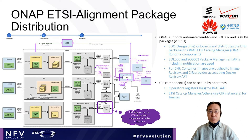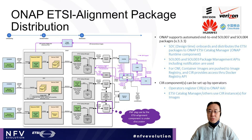Hi, this is Byung-Wu John from Ericsson. I'm going to talk about ONAP ETSI alignment and package distribution. ONAP supports automated end-to-end SOL007 and SOL004 package distribution by conforming to ETSI specifications. SDC has a design-time tool to onboard and distribute the ETSI packages to the ONAP ETSI catalog manager, which is an ONAP shared component at runtime. We're conforming to SOL005 and SOL003 package management APIs, including notification. For CNF, container images are pushed to an image registry, and the CIR provides access through the standard Docker registry API. We expect operators to provide their own CIR components, and operators register the CIR to ONAP A&AI, which is the ONAP inventory and external component management system, so the ETSI catalog manager and others can use CIR instances for images.